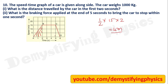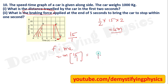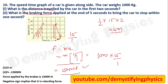To find the braking force applied at the end of 5 seconds to stop the car within 1 second, find acceleration from the slope during that interval: perpendicular / base = 15 / 1 = 15 m/s². This is uniform retardation. Force = ma = 1000 × 15 = 15,000 Newton. Acceleration is negative (retardation), so the force is retarding. But if asked for the force applied by the brakes, the answer is positive: +15,000 Newton, since the negative sign itself conveys retarding direction.